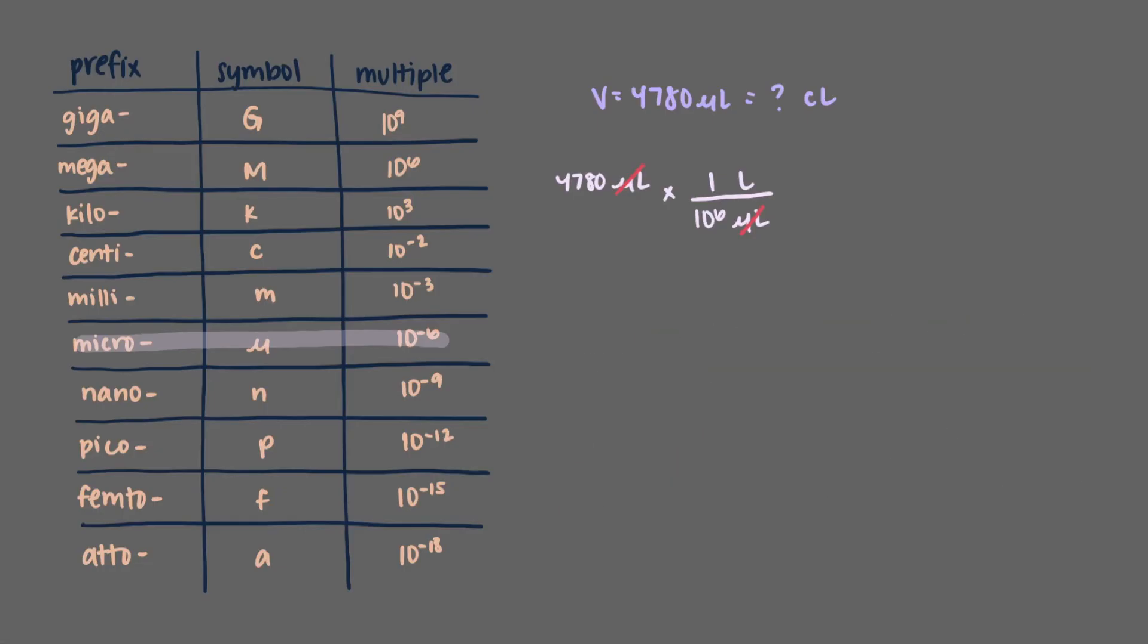We'll continue our dimensional analysis by multiplying what we have by the conversion of 10 to the second centiliters, 100 small things, over one liter, one big thing. The liters cancel out and the only units left are centiliters. Now multiply through the top and divide by the bottom and you get 0.478 centiliters.